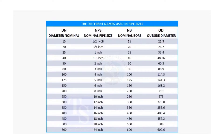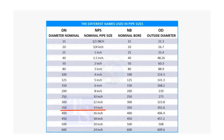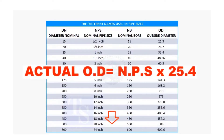In the case of nominal pipe size, the NPS and actual pipe OD are different up to 12 inches. Up to 12 inch pipes, you may need to memorize the actual OD size. For 14 inch and above, multiply the inch size by 25.4 to obtain the actual OD of the pipe.